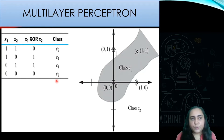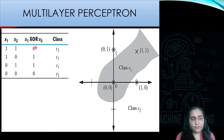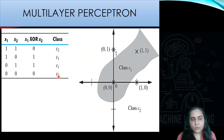Let's look at what a two-bit XOR looks like. You have x1 and x2, both can be either one or zero. If x1 and x2 are both one, XOR produces zero. If x1 and x2 are both zero, XOR also produces zero. But if they are different — x1 is one and x2 is zero, or x1 is zero and x2 is one — XOR produces one in both cases. So when x1 and x2 are equal it gives zero (class two), and when they are not equal it gives one (class one).